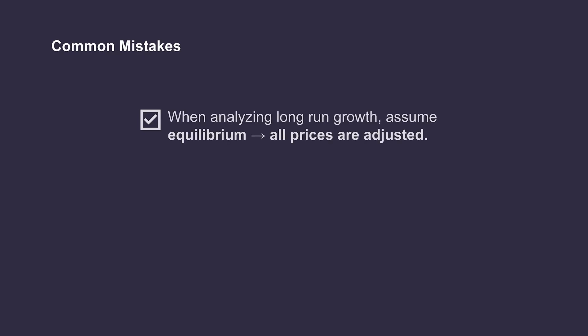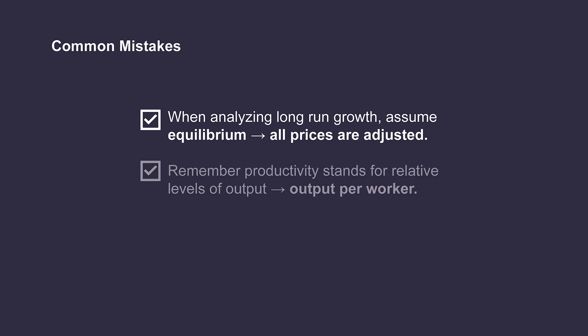Which are the most common mistakes? First of all, bear in mind that if we analyze economic growth in the long run, we assume to be in equilibrium — that is, all prices are adjusted, input prices and final products prices. Remember, productivity stands for relative levels of output. An increase in productivity is not equal to an increase in total output, but an increase in output per worker.